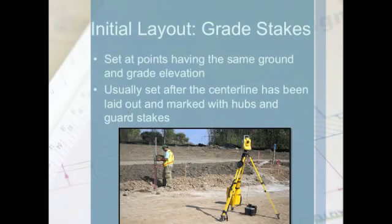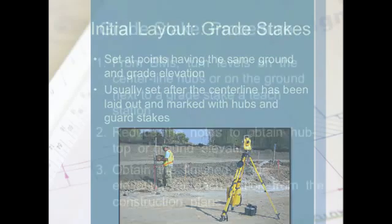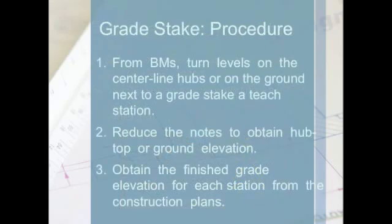Grade stakes indicate the exact grade and elevation to the construction force. The surveyor must consult the plans to determine the exact elevation of the subgrade and the distance from the centerline to the edges of the shoulders. Grade stakes are a set of points having the same ground and grade elevation. They are usually set after the centerline has been laid out and marked with hubs and guard stakes, and can be re-established if the markers are disturbed by construction equipment.